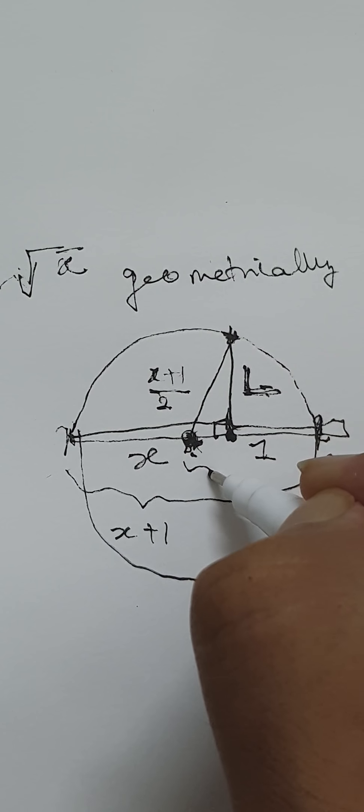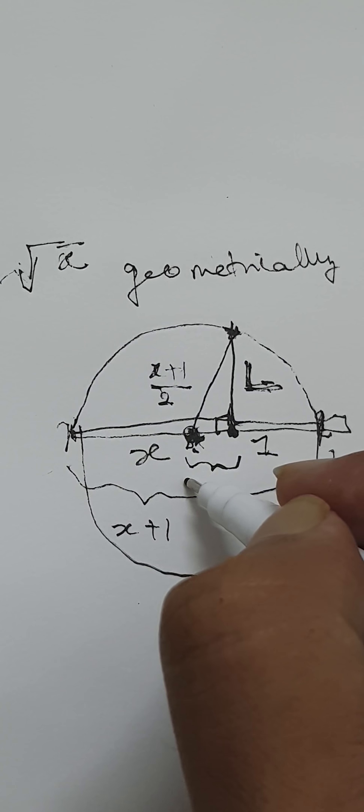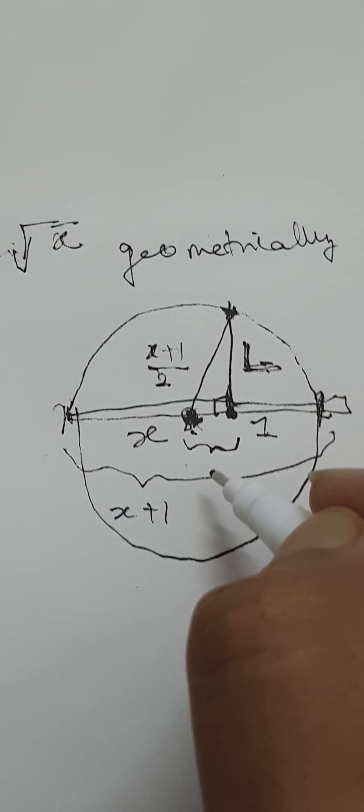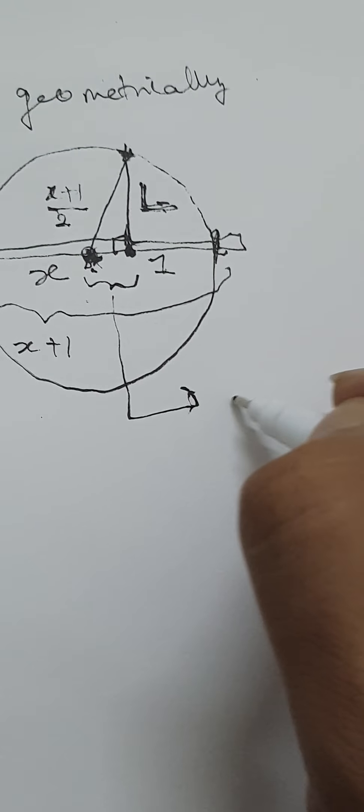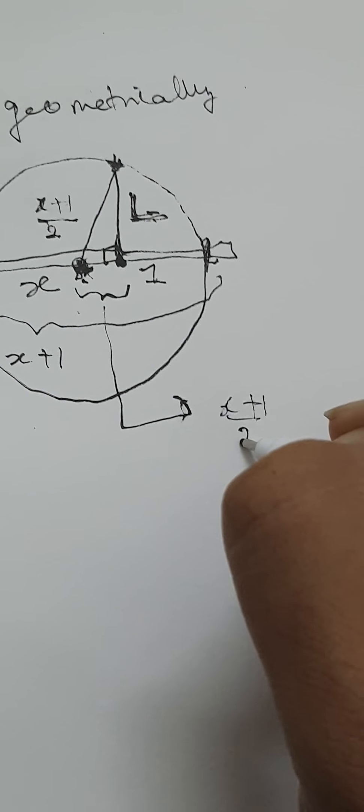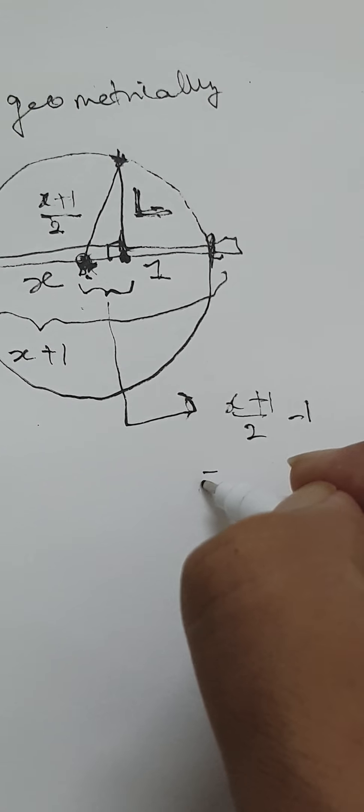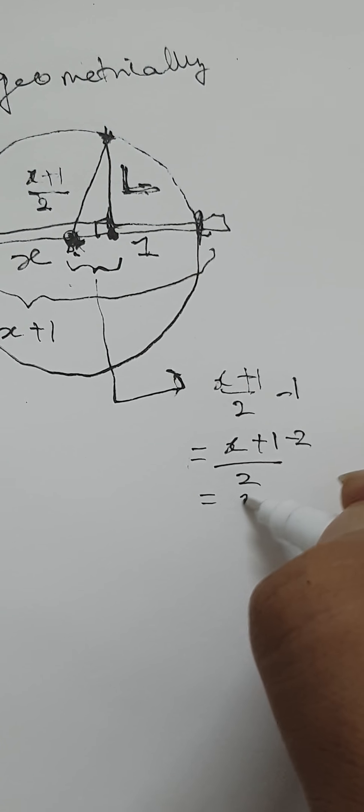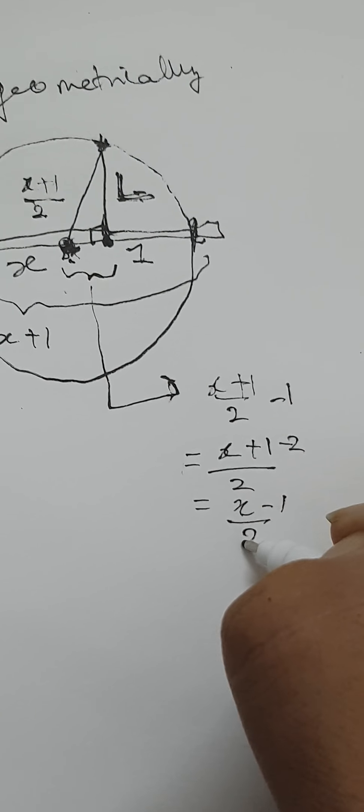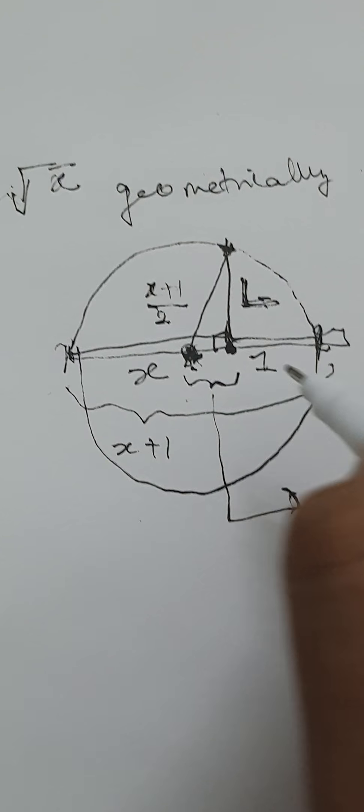And this length is the radius minus 1. So this length is given by the radius minus 1, which is x plus 1 by 2 minus 1. So that's x minus 1 by 2.